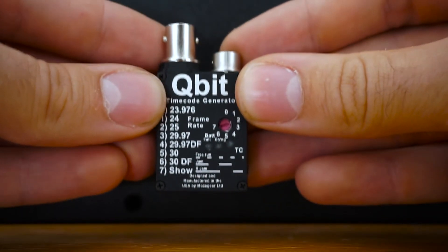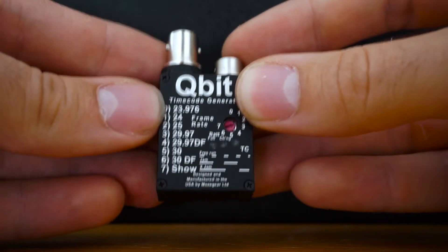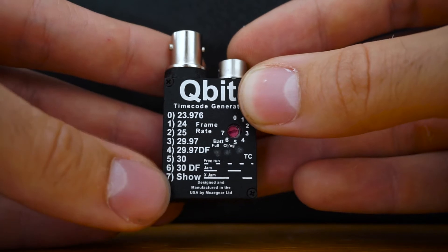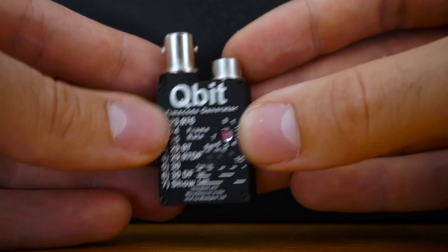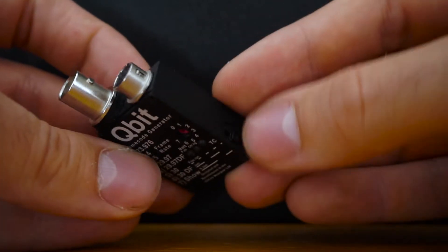We have the timecode rates on here and a show option which I'll demonstrate later. Anytime you're changing any of these settings, make sure you switch off the unit first. Once we switch it on, it rapidly looks for a timecode signal.